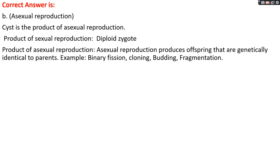In sexual reproduction, haploid male gametes fuse with haploid female gametes leading to formation of a diploid zygote. In asexual reproduction, the product is genetically similar to the parents, while in sexual reproduction the product has some characteristics of each parent. Examples of asexual reproduction include binary fission, cloning, budding, and fermentation.